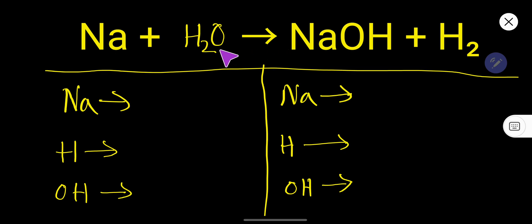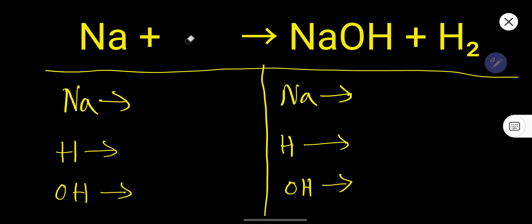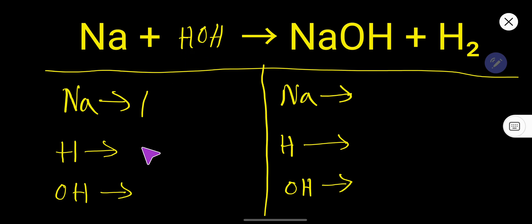To balance this equation, first try to rewrite this water as H(OH), because on the right-hand side you can see the presence of OH. So you can easily write water as H(OH) to make this equation easier to balance. On the left-hand side, the number of sodium is 1, the number of hydrogen is 1, and the hydroxide radical is 1.